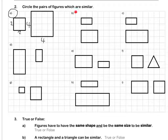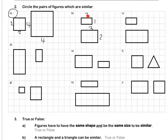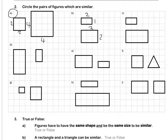Let's look at B. The first rectangle is two units by one unit. The bigger one is three units by two units. My width I have doubled. However, my length is not in the same ratio because two times two is four, not three. Therefore, these two figures are not similar.